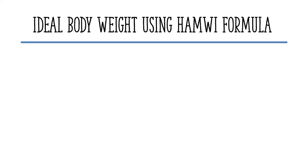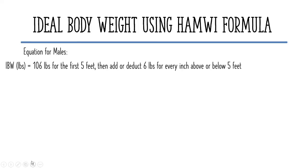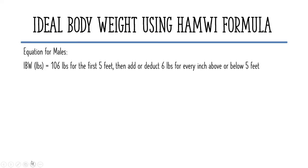Let us start first with the males. The equation for males is 106 pounds for the first 5 feet, then add or deduct 6 pounds for every inch above or below 5 feet.